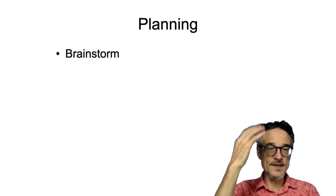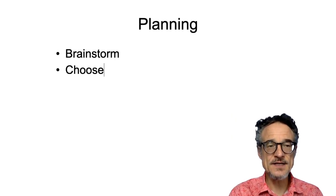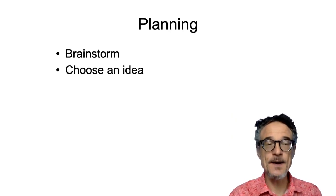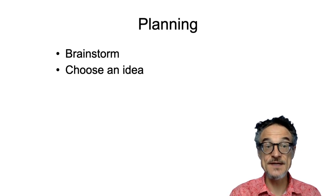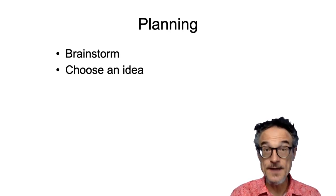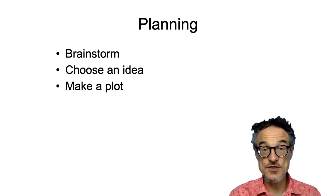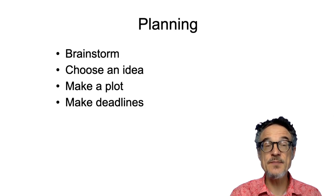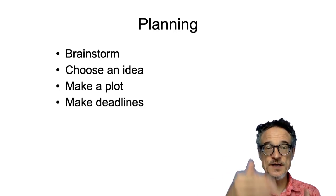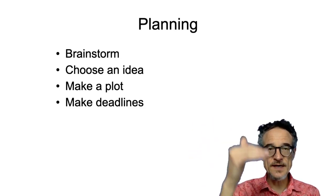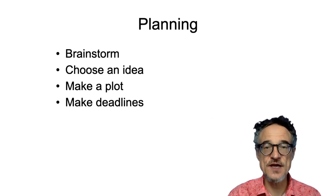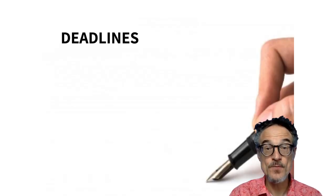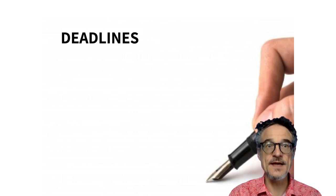The next step is choosing an idea — the best idea that you have or can find. Next, we need to make a plot. We've talked about plot before. And we also need to make deadlines, deciding when each step of our writing process will be complete.